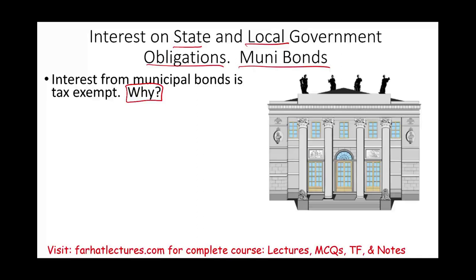I can see this topic being tested much more in the future on the CPA exam. The rule is simple: interest on a municipal bond is tax exempt. As long as you see the word municipality or the word state in that bond, it's not included in taxable income. The trick — the challenge — is when you are given the opportunity to evaluate an investment in a municipal bond versus a corporate bond, and that's what we'll do in terms of computation.